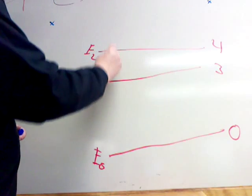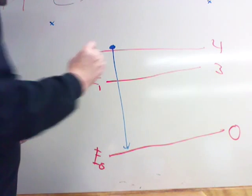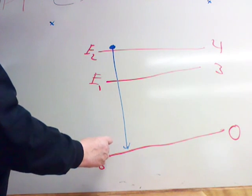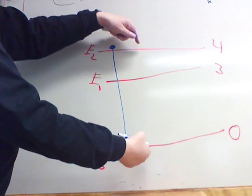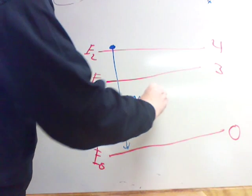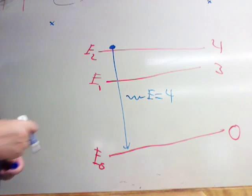This could fall directly from the second excited state to the ground state, thereby emitting a photon of energy equal to the energy difference between those two levels. So, out would come a photon of energy equal four in that case.